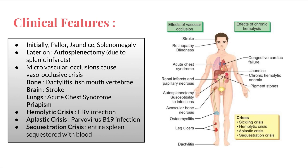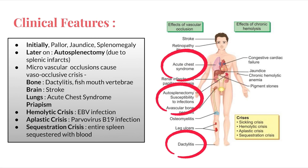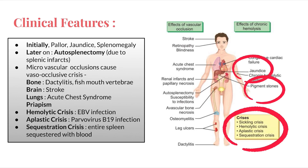Clinical features: initially there is pallor, jaundice, and splenomegaly, but an important point is that later splenomegaly gets converted into autosplenectomy — the spleen becomes shrunken due to splenic infarcts. In bone, dactylitis is an important feature. In the brain, stroke can occur; in the lungs, acute chest syndrome; priapism is also a possible finding. Certain infections can trigger crises: EBV infection can lead to hemolytic crisis, parvovirus B19 infection to aplastic crisis, and sequestration crisis can also occur.